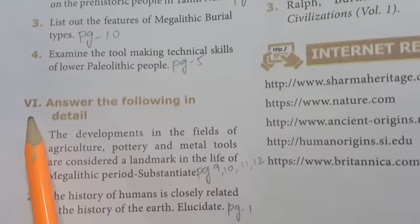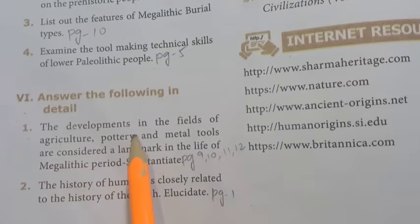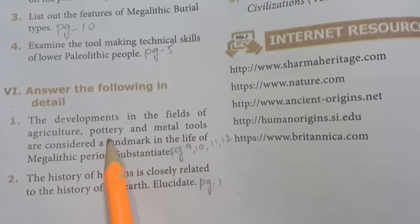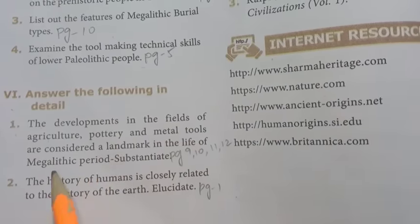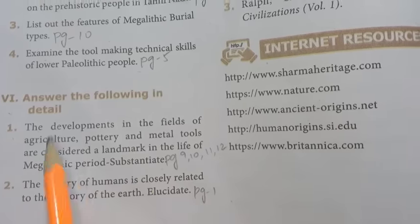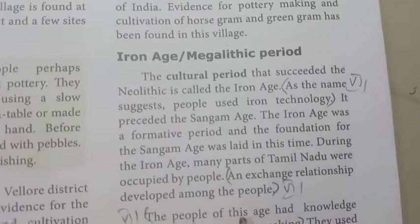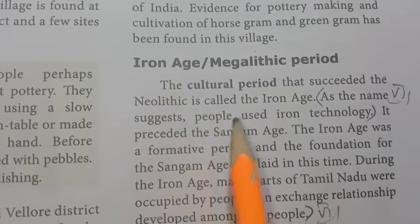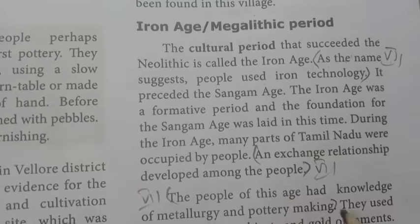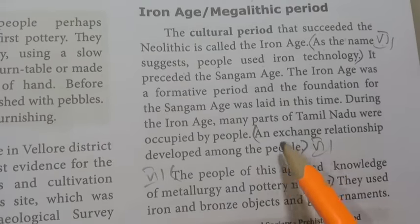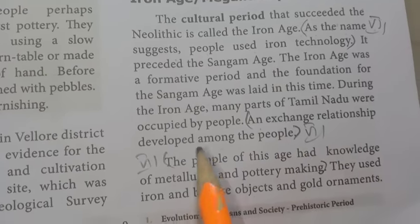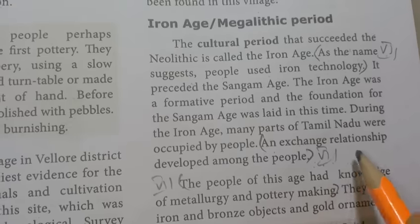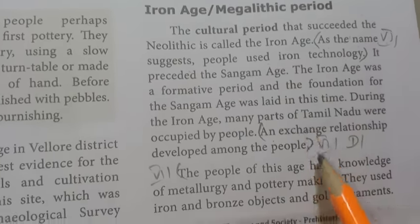Moving to Roman numeral VI, Answer the following in detail. First one: the developments in the field of agriculture, pottery and metal tools are considered a landmark in the life of the megalithic period - substantiate. Turn to page 9, under 'Iron Age Megalithic Period.' The people used iron technology. Exchange relationships developed among the people. Then pottery making details follow.